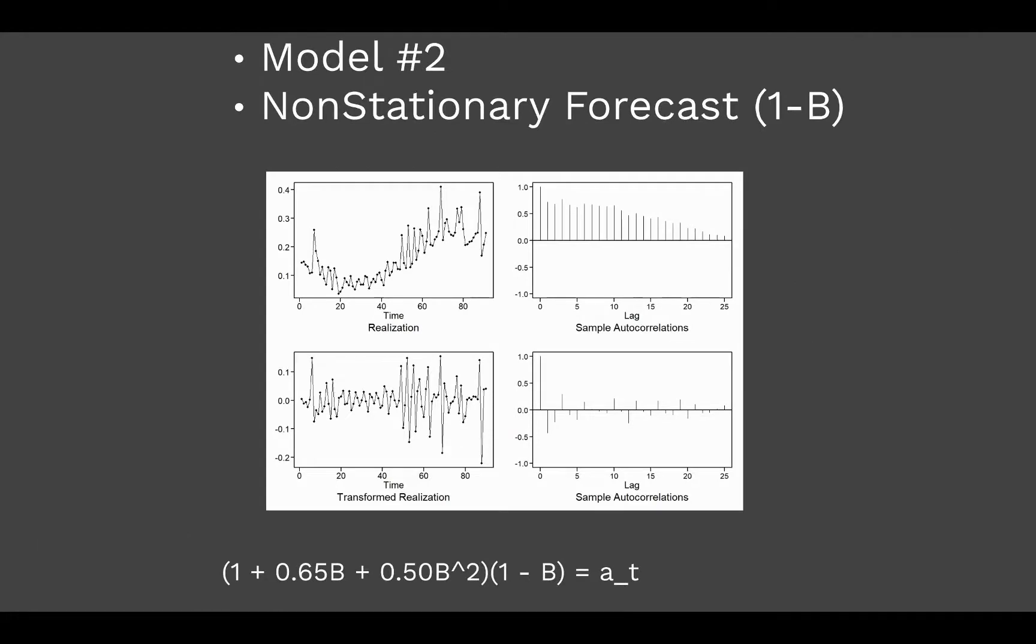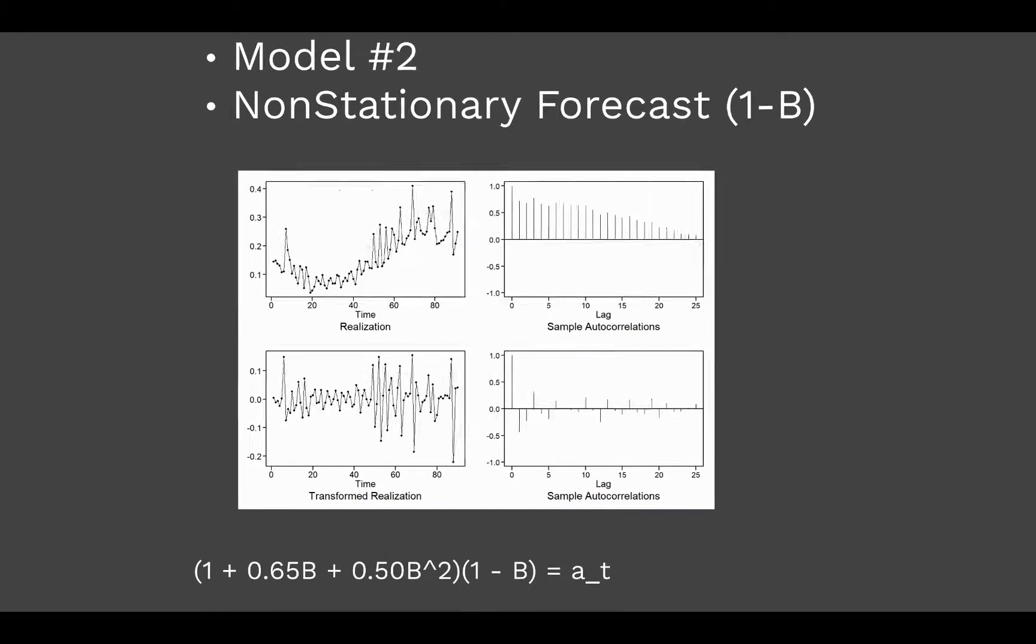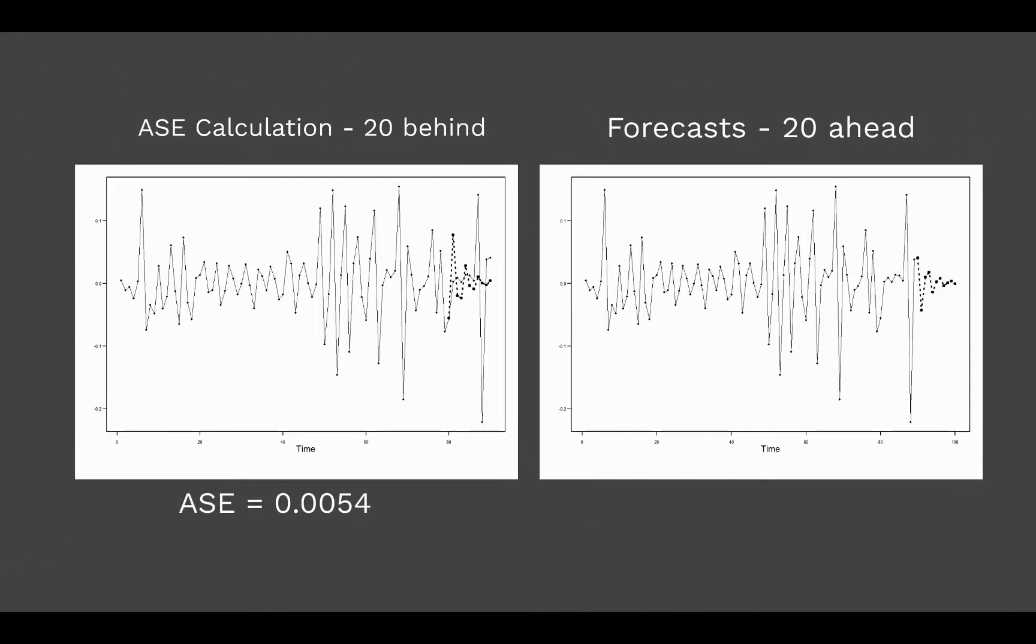Next we did a non-stationary forecast where we difference based off the trend. Our AIC selected an ARIMA 2,1,0 model which you can see the formula below and it gave us the 20 behind forecast here in comparison to the actual realization. Here's our respective ASE score.